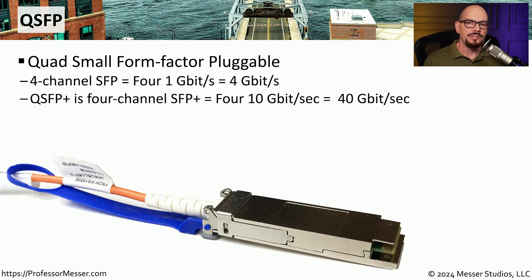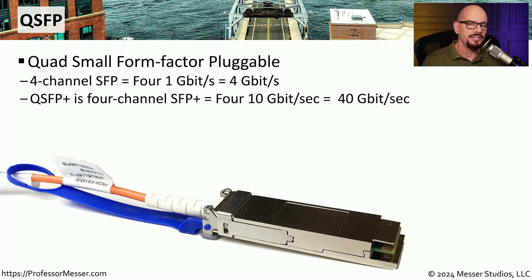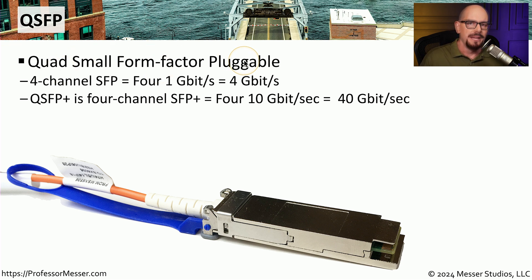When you're installing equipment into a rack in a data center, you have a limited amount of space available. The equipment is only 19 inches wide, and the total amount of space in the rack is limited by the data center itself. So we want to be sure that we can put as much connectivity into a single space as possible. To that end, we've created the QSFP, or the Quad Small Form Factor Pluggable, which effectively allows you to have four times the amount of throughput into a space very similar to that of an SFP.